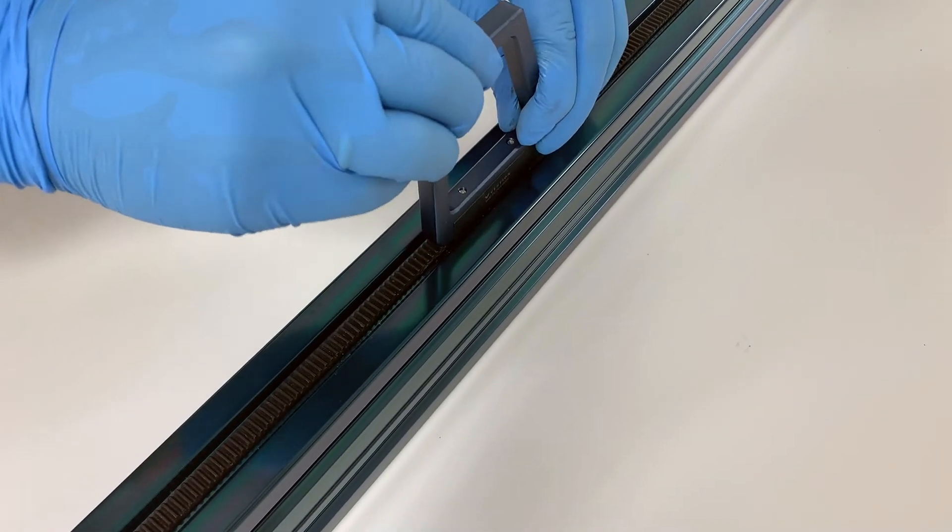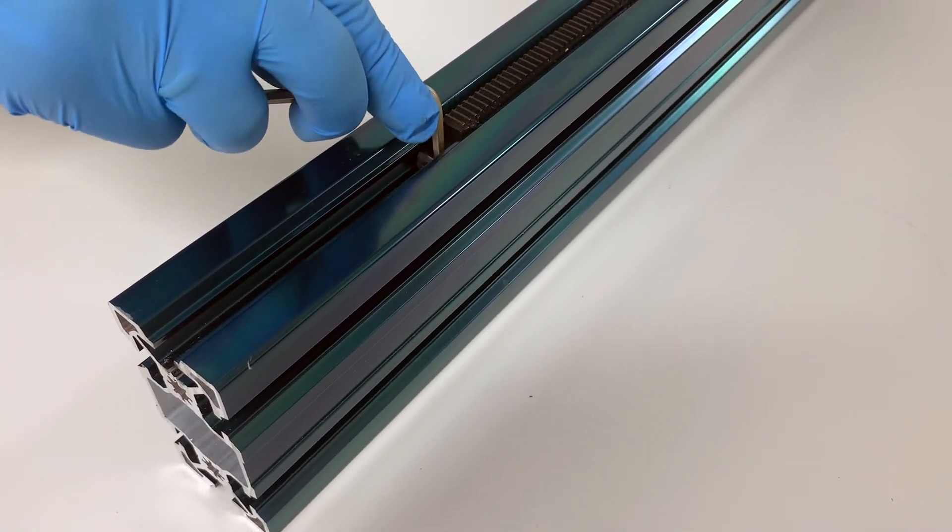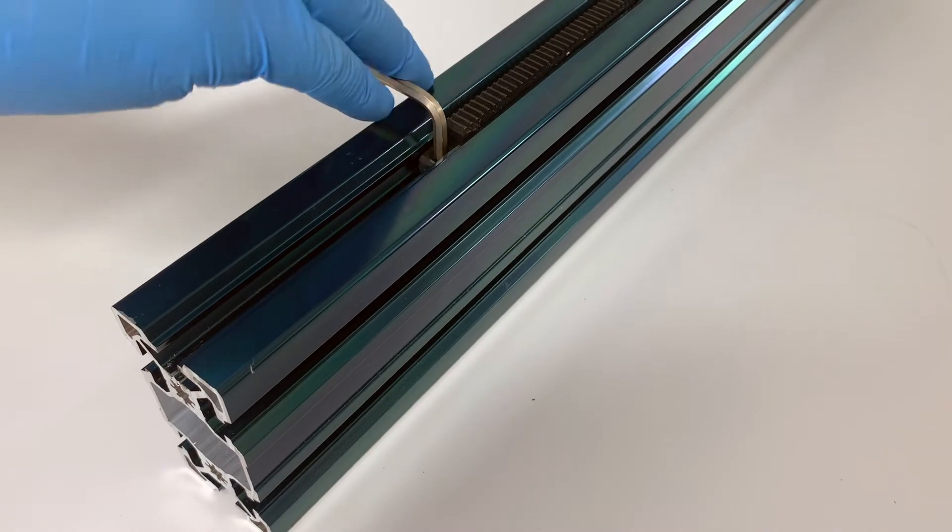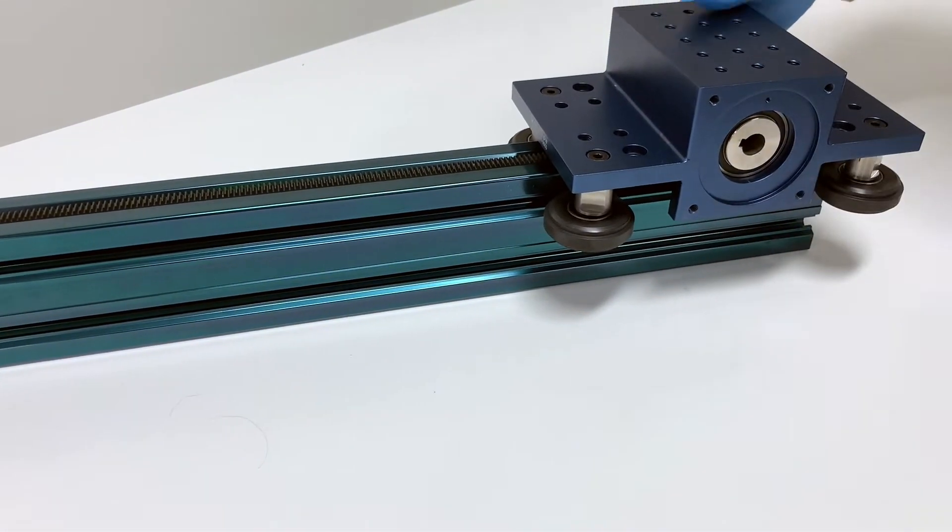Tighten the set screw on the lip of the second rack segment to secure it in place. If your design makes use of multiple rack segments, repeat this procedure for all segments.